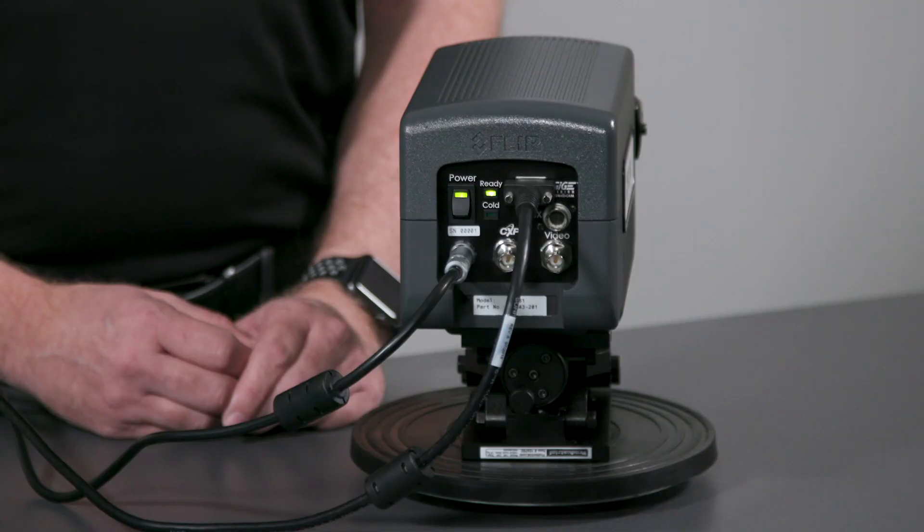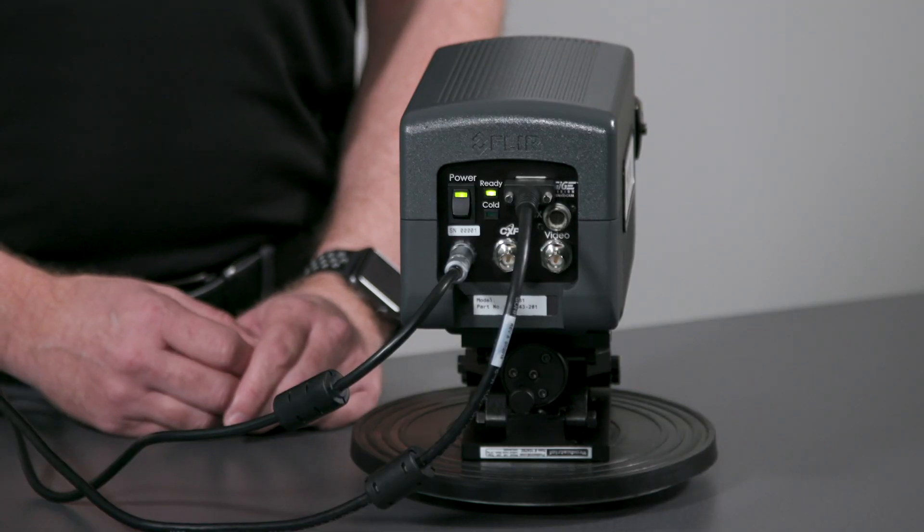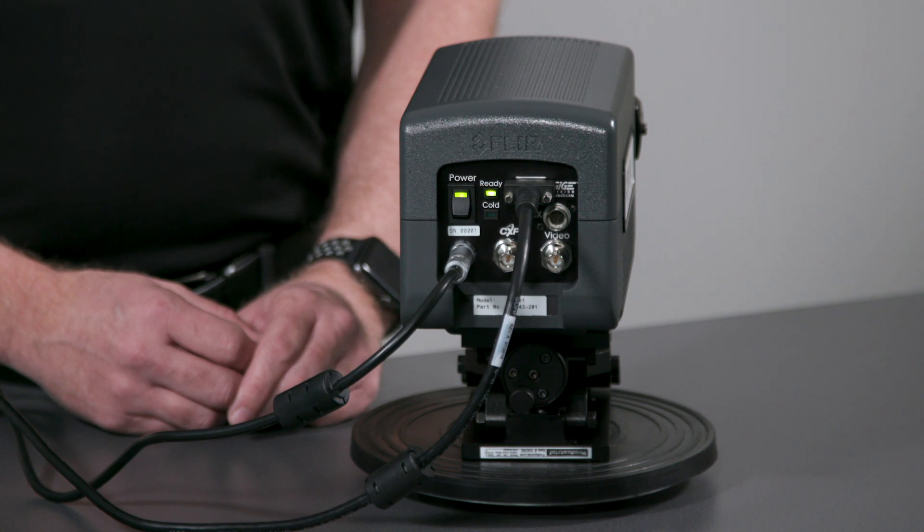You'll notice there are two status lights on the back of the camera. One indicates when the camera is ready for communication. The other indicates when the detector has reached its operating temperature.